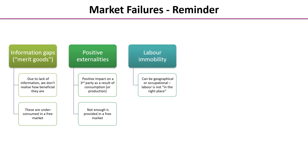Labour immobility is having labour not in the right place. It can be either geographical or occupational. If it's geographical, we might have vacancies in one area of the economy but unemployed people in another area, and we can't match the two up. That could be because of poor, lack of, or expensive transport, commuting times, or because of house prices being very different in those two areas.